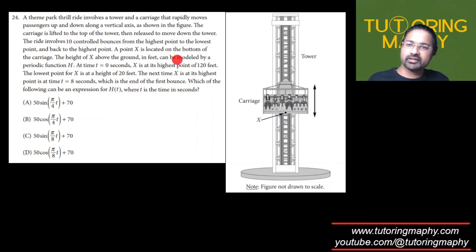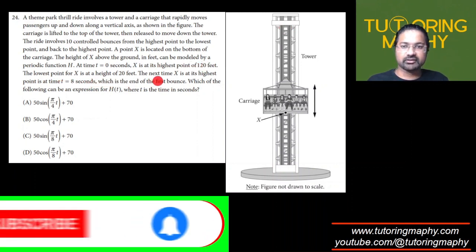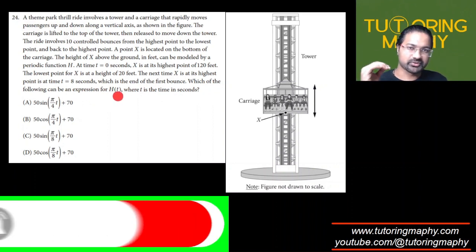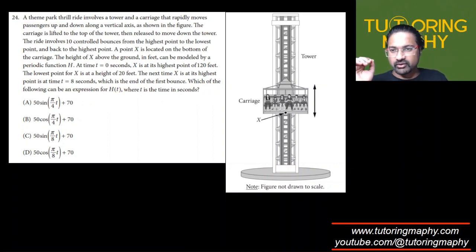A point X is located at the bottom of the carriage. The height of X above the ground in feet can be modeled by a periodic function h. At time t equals 0, X is at the highest point of 120 feet. The lowest point of X is at 20 feet, and the next time X is at its highest point is 8 seconds, which is at the end of the first bounce.